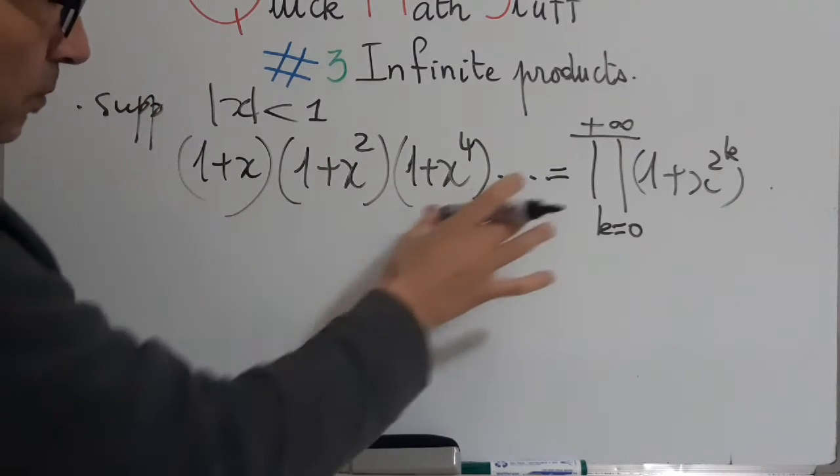We have that the product of (1 + x_i) from i=1 to infinity is always greater than 1 plus the series, and less than or equal to 1/(1 - series).